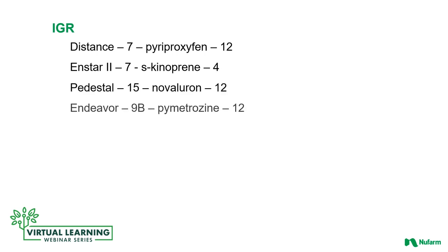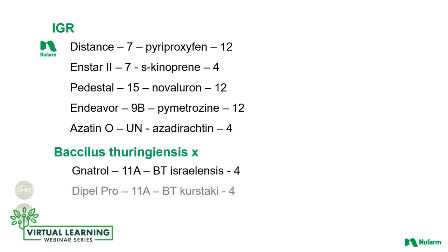Moving now to insect growth regulation and Bacillus products, all of which are OMRI certified. Insect population control is made more effective by disrupting the life cycles of the pest, thereby eliminating the next generations without traditional chemical applications. Distance controls whiteflies, fungus gnats, scale, and other insects by preventing eggs, larvae, and pupae from maturing into adults. Pedestal and Azadirachtin prevent proper molting; Endeavor stops adult aphids and whiteflies from feeding. BTs lay dormant until they enter the alkaline insect stomach, activating the Bacillus to attack the gut — Bt israeliensis is specific to fungus gnats, and Bt kurstaki works on lepidoptera.